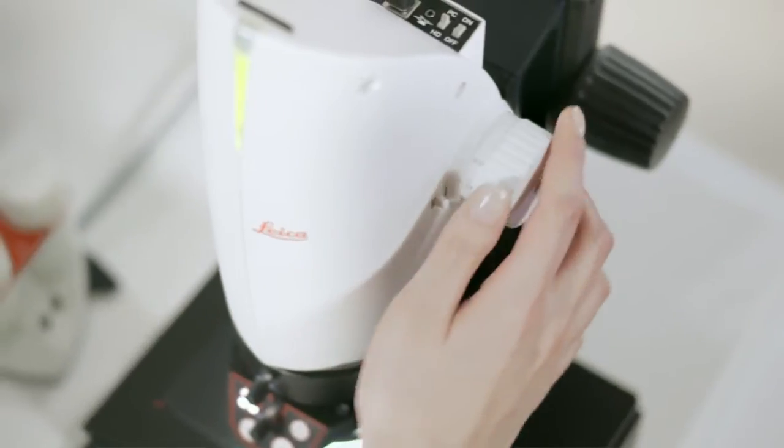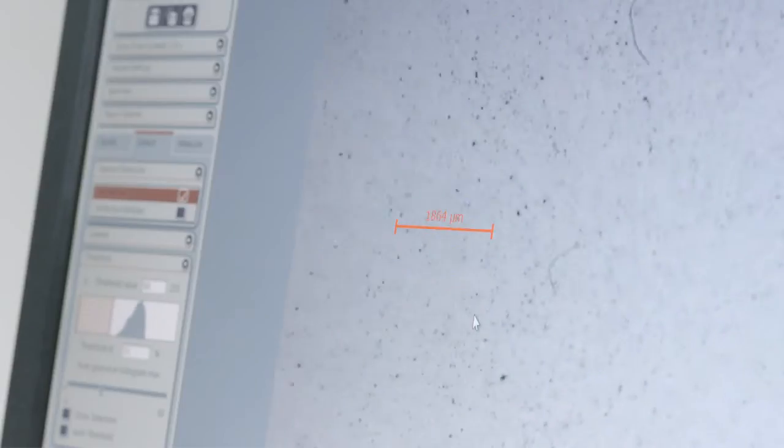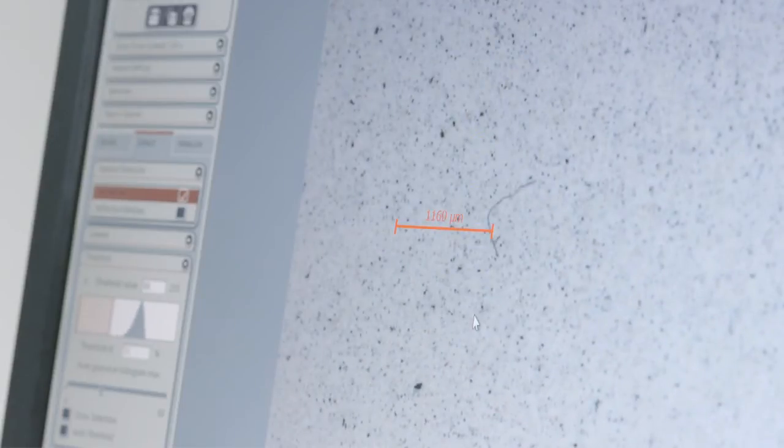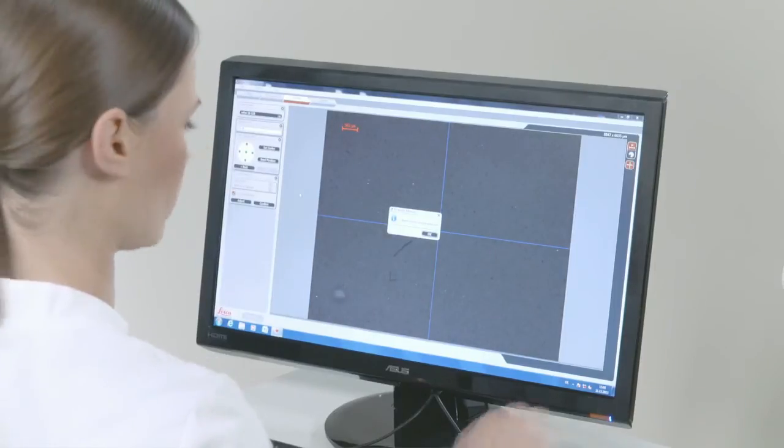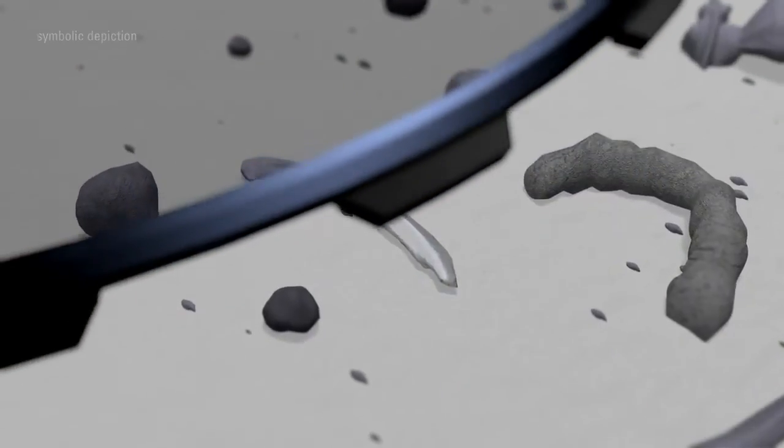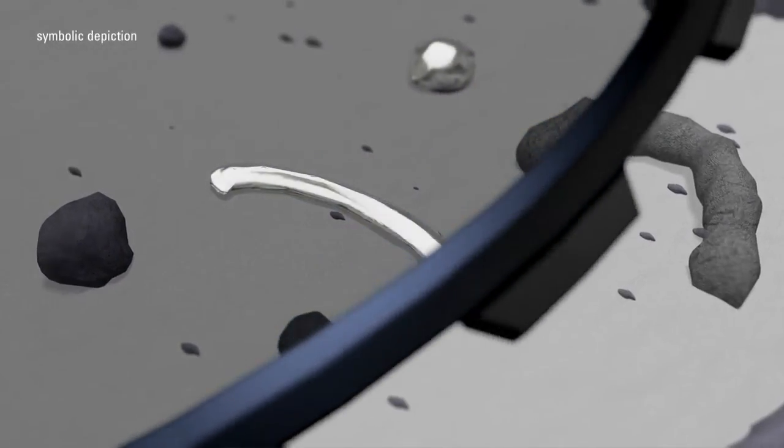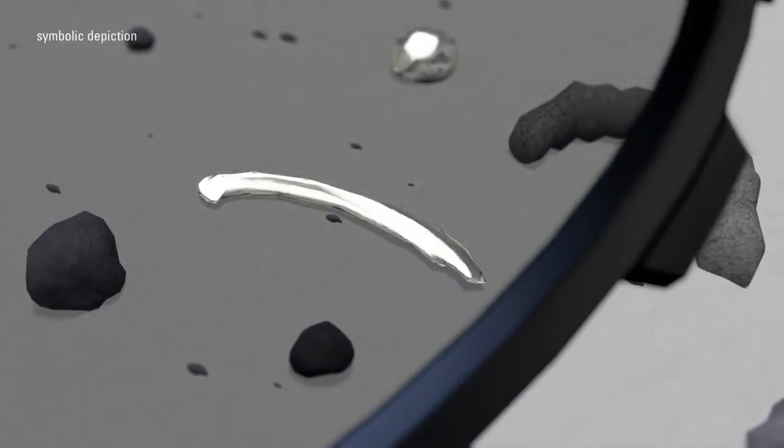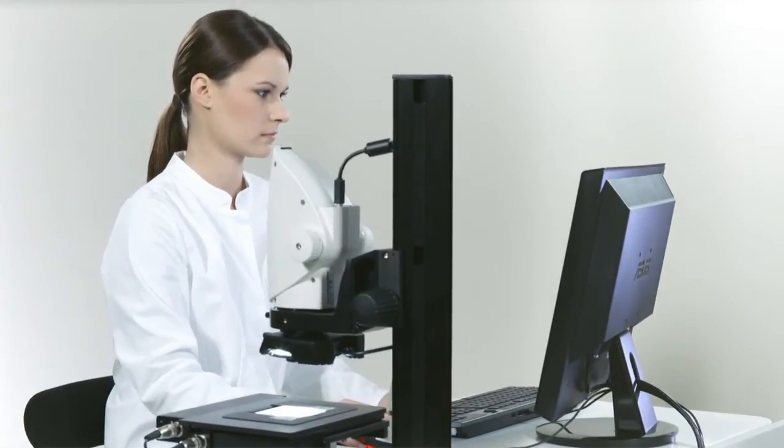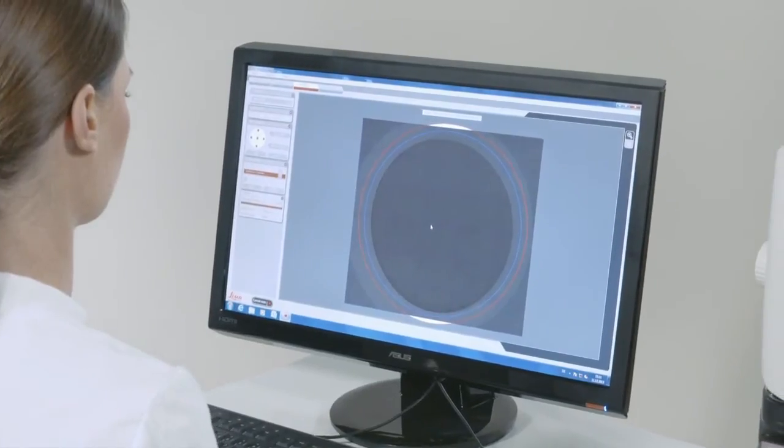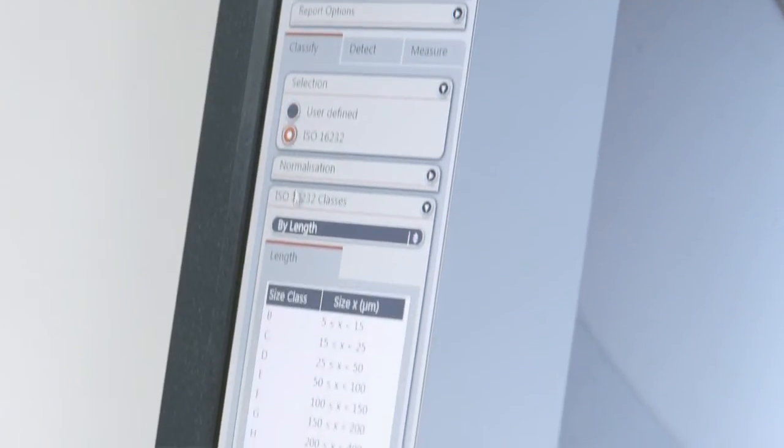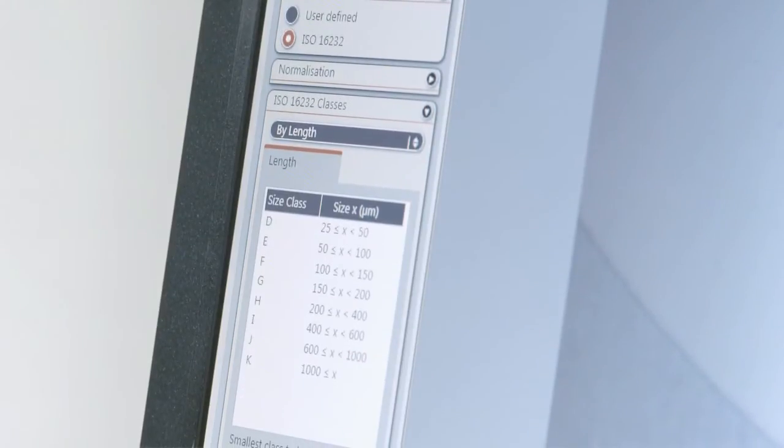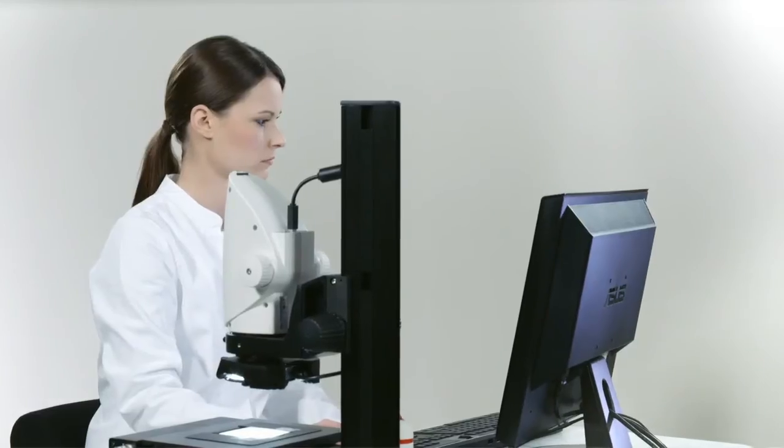The Leica DMS 1000 features an encoded zoom for exact reproducibility of measurements, and it can distinguish between reflective and non-reflective particles, a necessity in many cleanliness inspections. Even in such a compact system, there are numerous software options, for instance automatic analysis according to engineering standards or your customer's specifications.